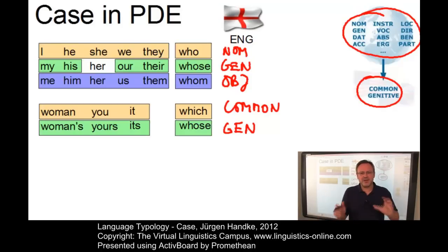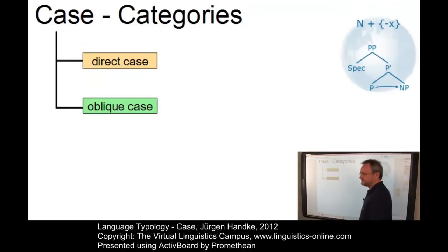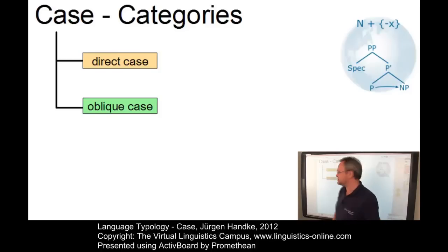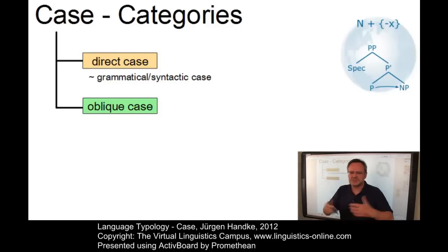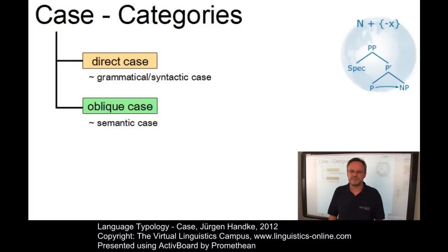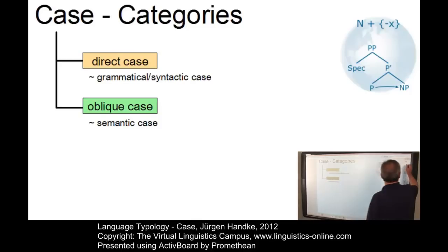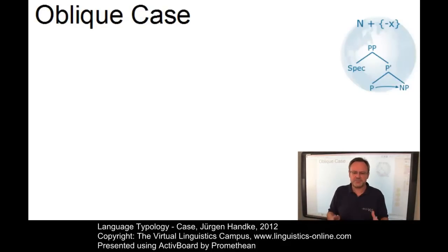Having exemplified variants of case, let us now look at the classification of case in general. The notion of case can be subdivided into two central categories: direct case, also called grammatical or syntactic case, and the oblique case, also referred to as semantic case. Let us start with the treatment of the oblique or semantic case, which can be expressed in many ways.